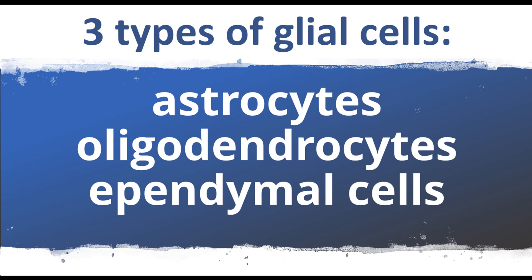Ependymal cells form the lining of the fluid-filled cavities in the brain called ventricles, and gliomas formed from ependymal cells are called ependymomas.